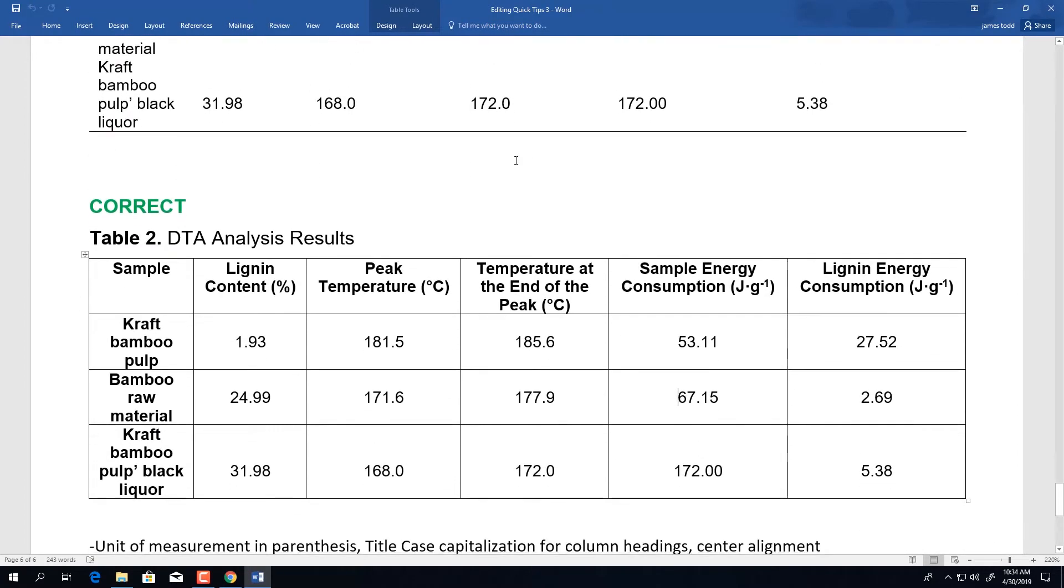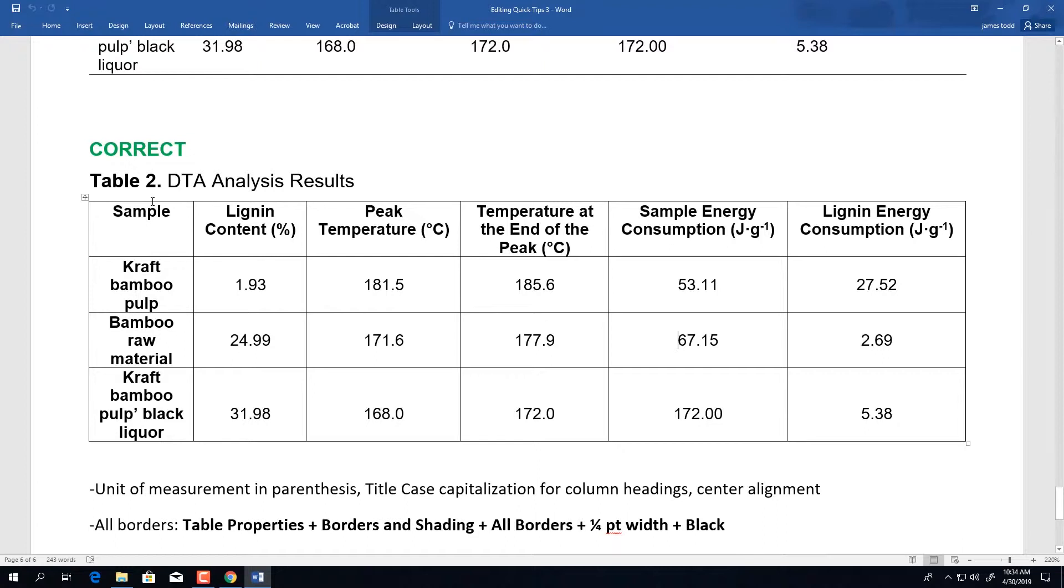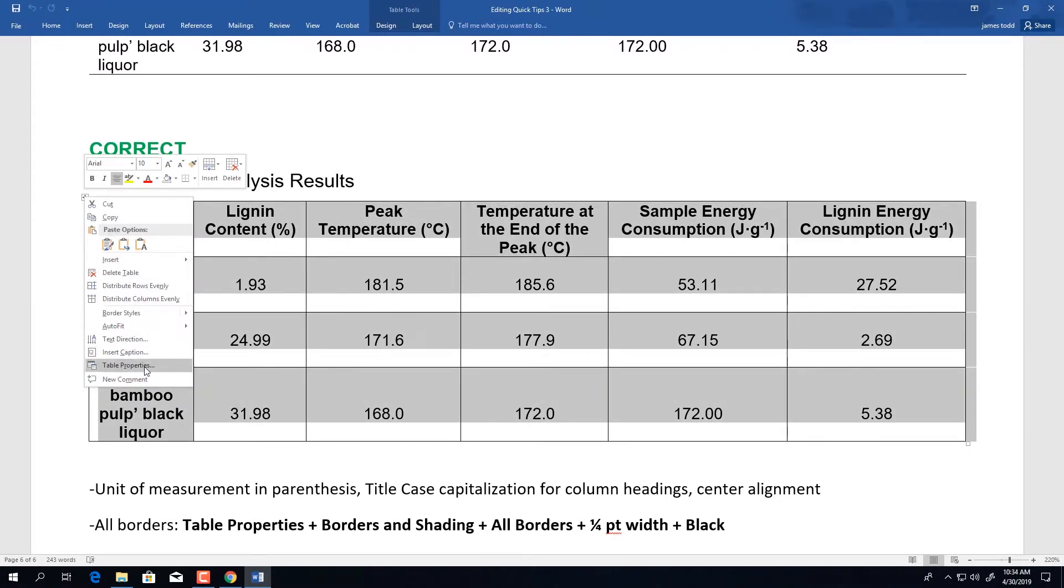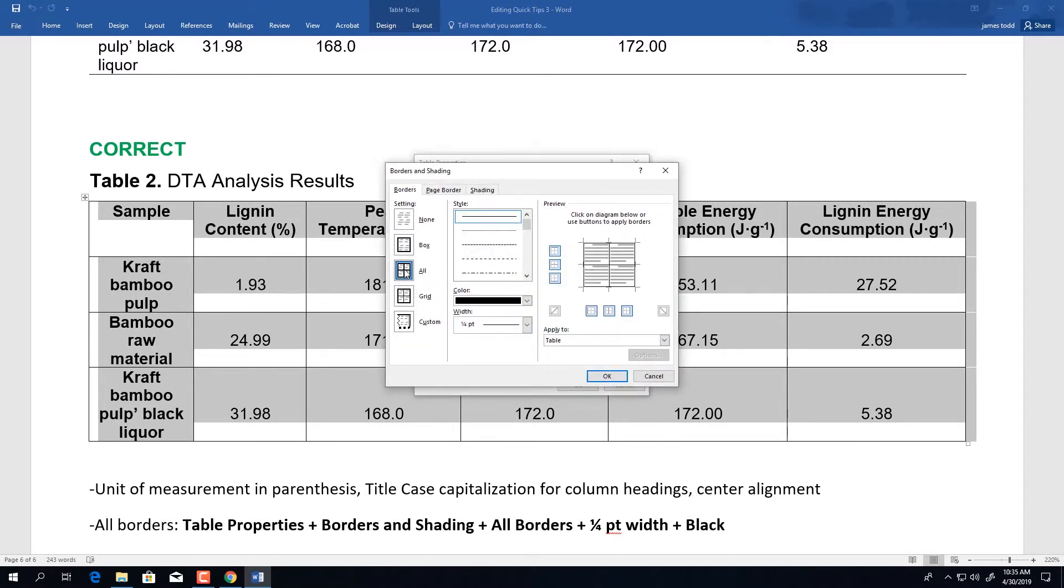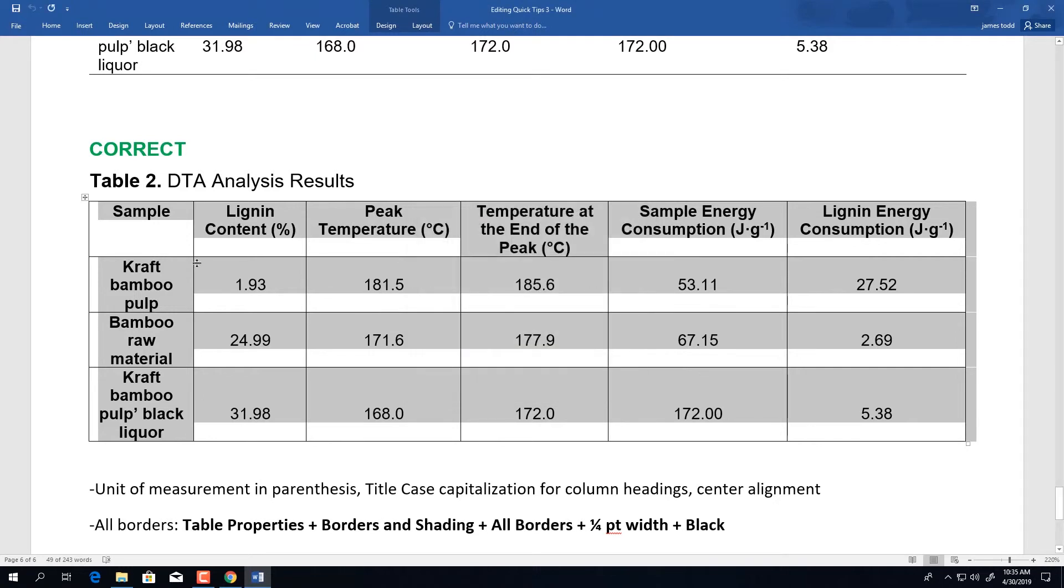Scrolling down, a quick way to show you how to show all the borders in the table is to click on this little icon at the top of the table and right click. You can click table properties, select borders and shading, select all borders, and make sure your width is the smallest point. Once you select OK, the borders should appear around the table.